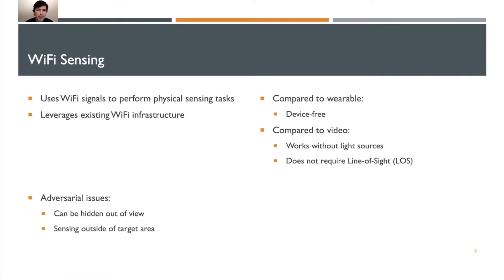This brings up what we're mainly looking at today, and that is adversarial issues with Wi-Fi sensing. Because these devices can be hidden out of view and can even be placed outside of the target area, and because Wi-Fi is so ubiquitously placed throughout all of our lives, this brings up issues that an adversary could use this for bad intentions.